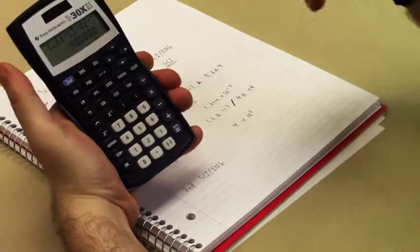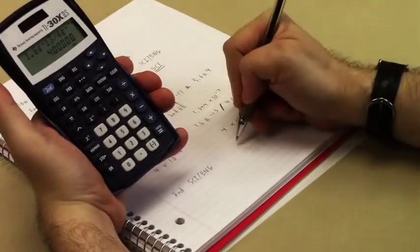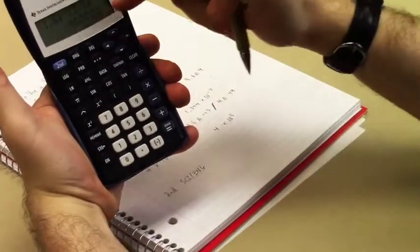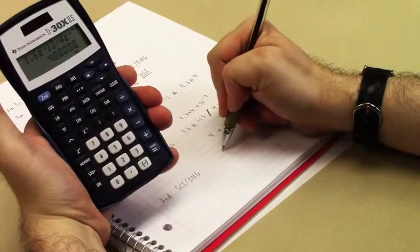Okay. That's going to change it from scientific notation mode to floating point mode, which means it's going to start expressing the numbers like that without the scientific notation there.